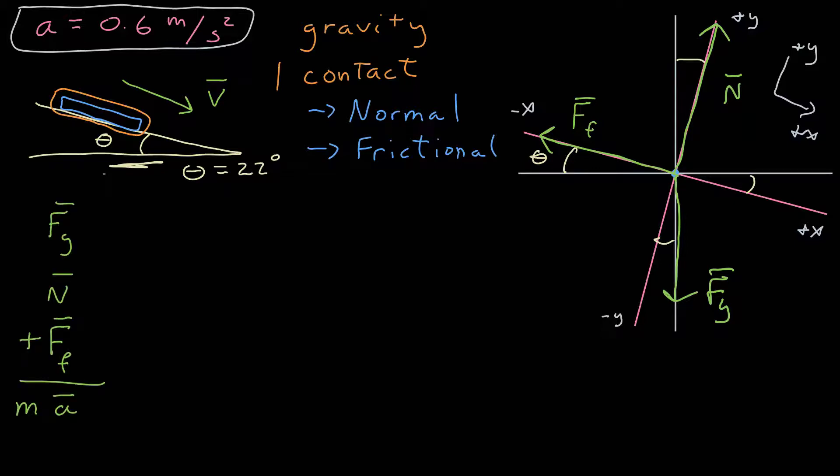Next is Newton's second law, which says the vector sum of all the forces is equal to the mass of that one object times the acceleration of that one object. Now I want to find those vectors in component form. The gravitational force does not lie along one of the axes, so I have to find its components. So I draw a line from the tip of the vector to one of the axes such that it makes a right angle.